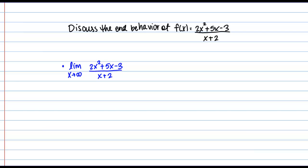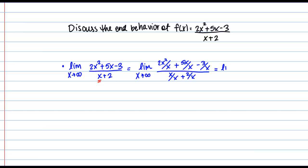A method that's often very helpful when looking at the limit at infinity of a rational function is to divide both the numerator and the denominator by x to some power, where that power is the highest power in the denominator. For this function, the highest powered term in the denominator is x to the first power. So I'm going to rewrite this limit by dividing every term in the numerator and denominator by x. I end up with the limit as x goes to infinity of, in the numerator, 2x plus 5 minus 3 over x, and in the denominator, 1 plus 2 over x.